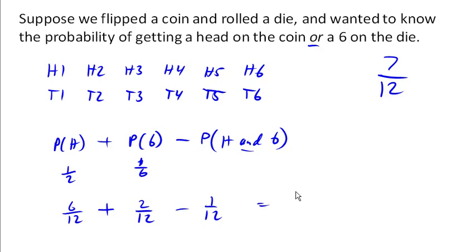And we get the same answer that we had there. So our basic rule here is that the probability of a or b is the probability of a plus the probability of b minus the probability of both.